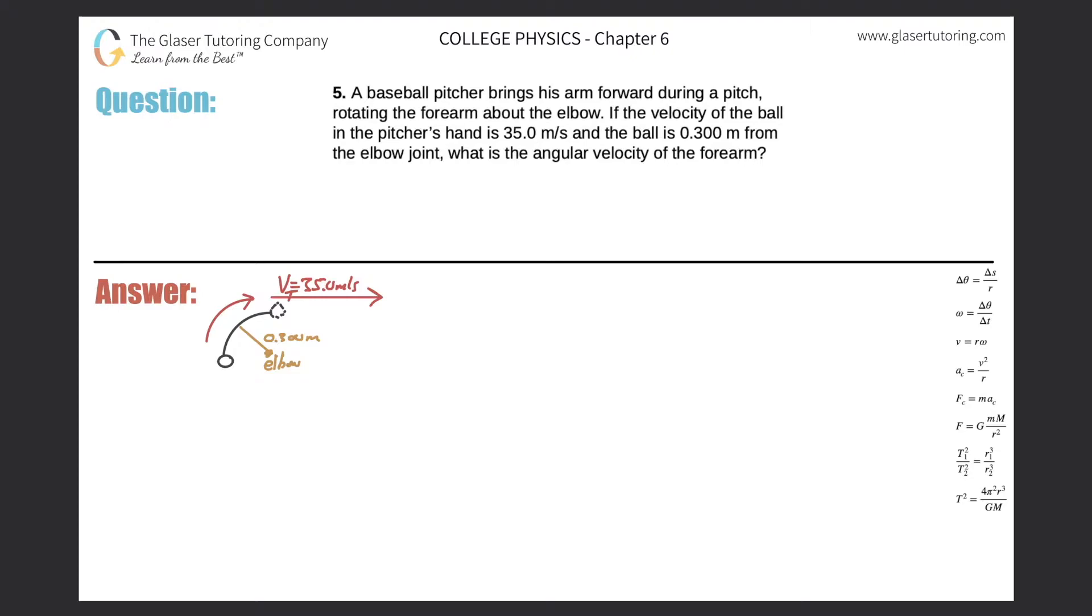Number five: A baseball pitcher brings his arm forward during a pitch, rotating the forearm about the elbow. If the velocity of the ball in the pitcher's hand is 35 meters per second and the ball is 0.3 meters from the elbow joint, what is the angular velocity of the forearm?